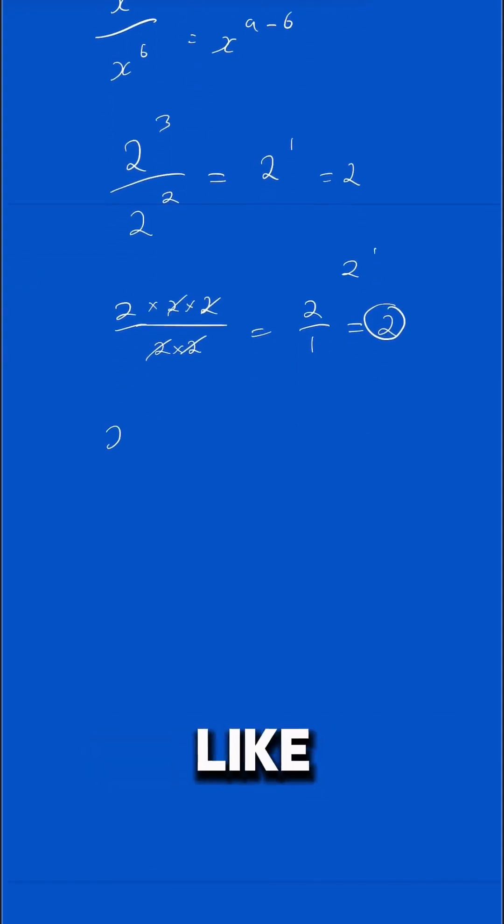But how about something like this? 2 to the power of 4 over 2 to the power of 4. Well, that's 2 to the power of 4 minus 4, which is 2 to the power of 0. Now, look, this and this...